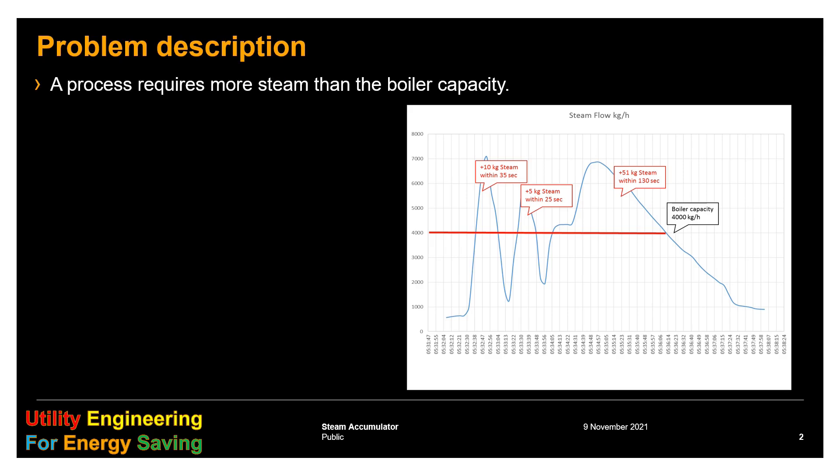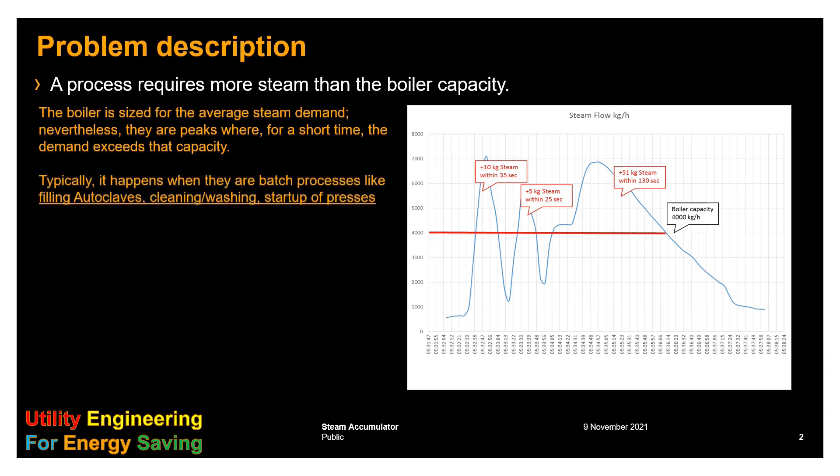The problem is if the process requires more steam than the boiler capacity. The boiler is sized for average demand, but nevertheless there are peaks, even for a short time, and the peaks exceed the boiler capacity. Typically it happens when we have batch processes like autoclaves, cleaning or washing machines, and start-up of presses.